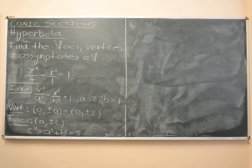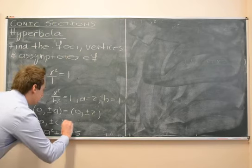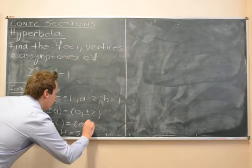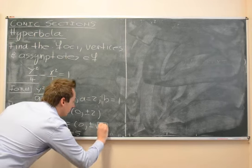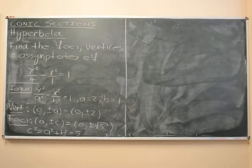So 5 in this case, so c is root 5, so the foci are at (0, plus or minus root 5).